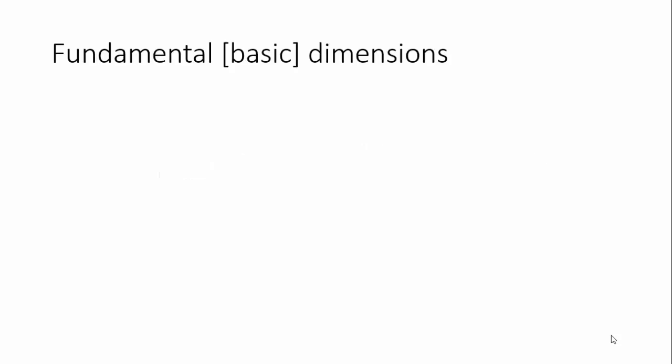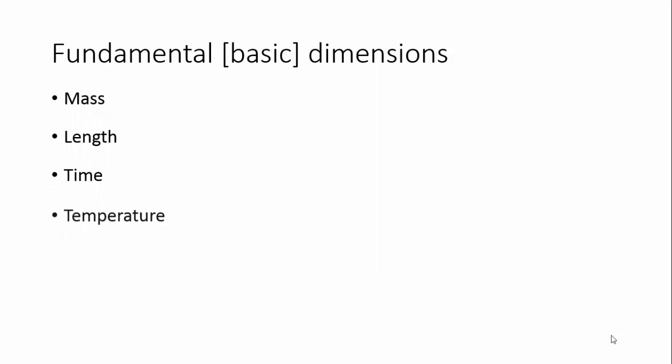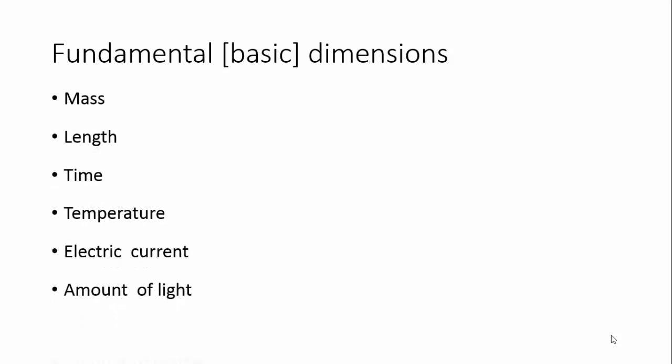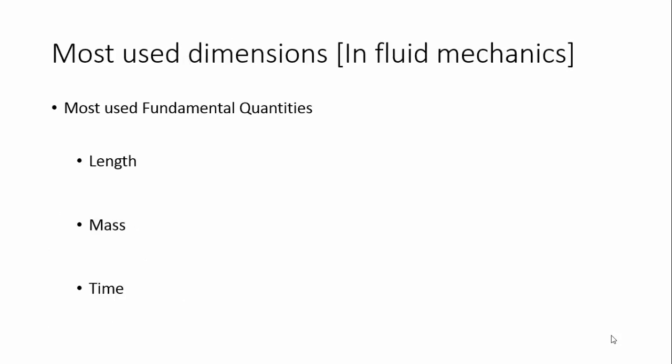Welcome. Now let us see the fundamental dimensions. There are many dimensions which are derived, but the fundamental dimensions are as follows: mass, length, time, temperature, electric current, amount of light, and amount of matter. These are the fundamental quantities. These fundamental quantities give rise to the derived quantities. Any quantity in physics or fluid mechanics is derived from these fundamental quantities.